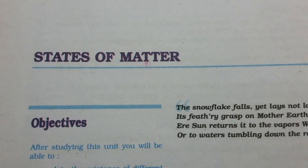It is thus found that real gases do not follow the ideal gas equation perfectly under all conditions. Deviation from ideal behavior also becomes apparent when a pressure vs. volume plot is drawn — at very high pressure, the measured volume is more than the calculated volume; at low pressures, measured and calculated volumes approach each other. Real gases do not follow Boyle's law, Charles's law, and Avogadro's law perfectly under all conditions. Two questions arise: first, why do gases deviate from ideal behavior? And second, what are the conditions under which gases deviate from ideality?